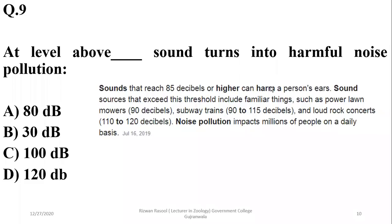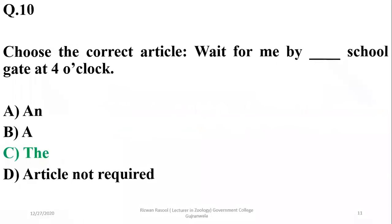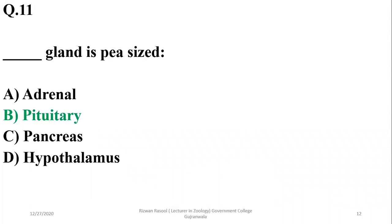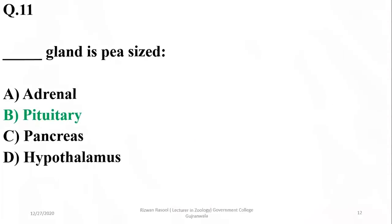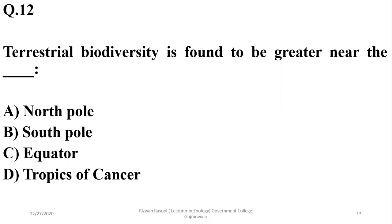Question 10: Choose the correct article — 'Wait for me by the school gate at 4 o'clock.' Charlie is the best option. The dash gland is the pituitary gland. And terrestrial biodiversity is found to be greater near the equator. So Charlie is the best option.